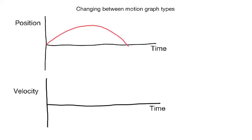Now let's look at a position graph that makes a little arc — going up and coming back down. The object starts at position zero, moves in the positive direction, then at the peak it turns around and moves in the negative direction back toward its starting point, which it reaches at the end. This might be a ball being thrown up and falling back down, or a person running one direction and then running back the way they came.